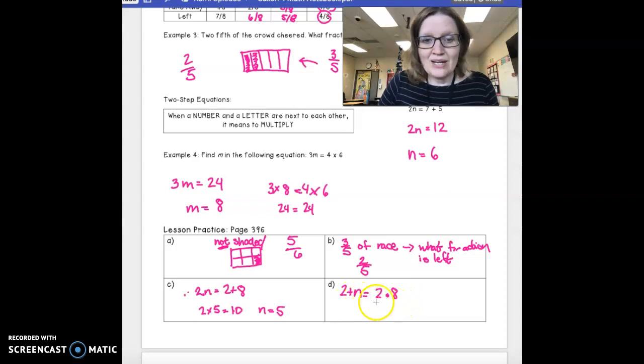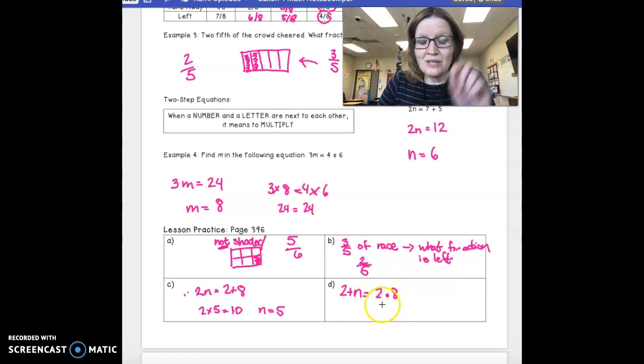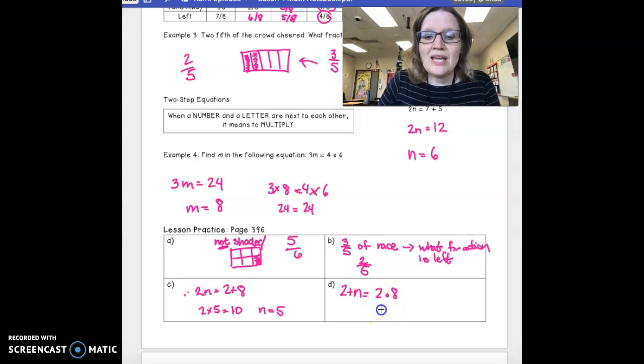We don't know what n is until we figure out this part of what's 2 multiplied by 8. Don't forget, the dot means multiply. 2 times 8 is 16. So, 2 plus n equals 16.